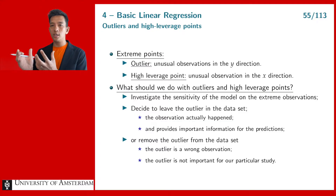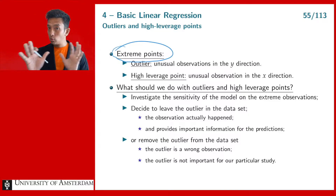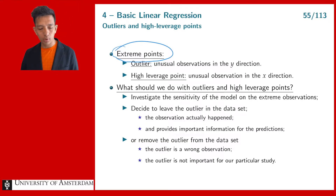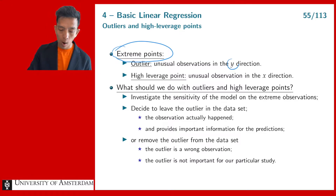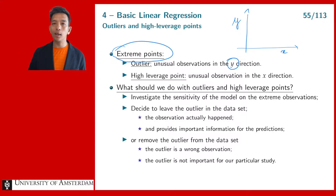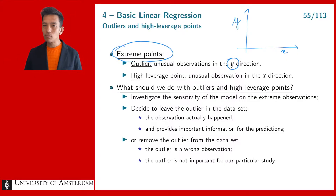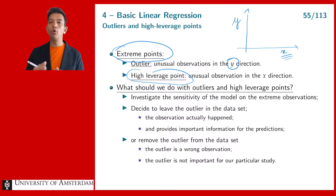In this video we continue talking about extreme observations. When talking about extreme observations or extreme points in two dimensions, we distinguish two types. There are outliers — these are observations that are unusual in the y direction. In a two-dimensional data set you have x and y, where y is often called the response or target variable, the thing we want to predict. So an outlier is a very large or very small value in the y direction, in the response variable. A high leverage point is an unusual observation in the x direction.